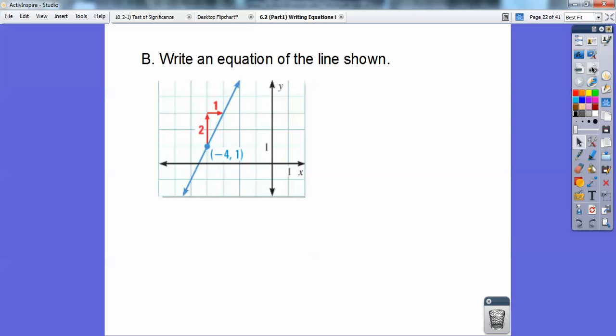So part B: Write an equation of that line shown. Now remember, your slope is rise over run. Here's my rise right here. It went up 2 and then went over 1. So the rise is 2 over 1. Your slope is going to be 2. So now we know y equals 2x plus b.